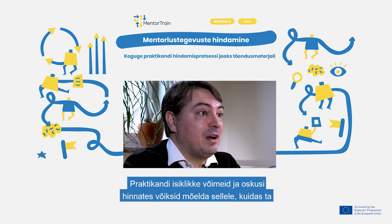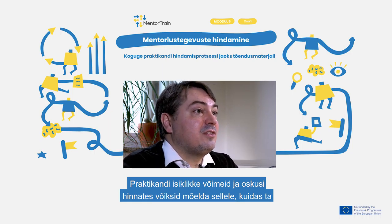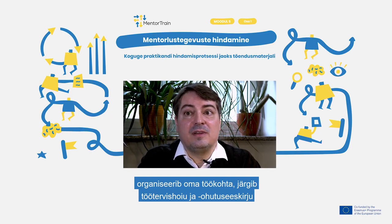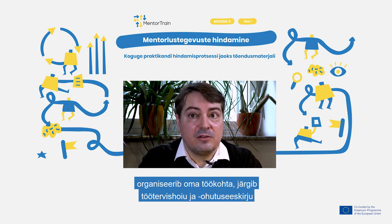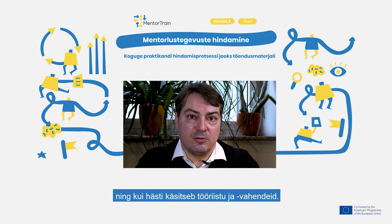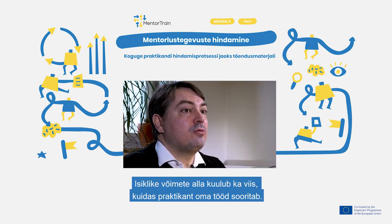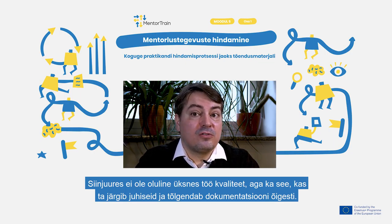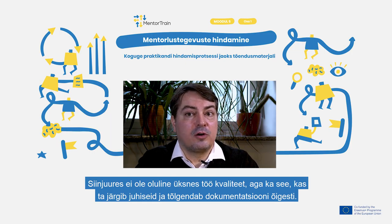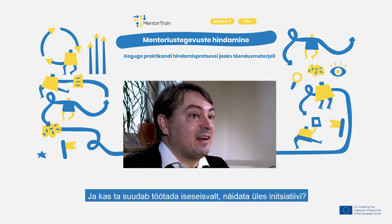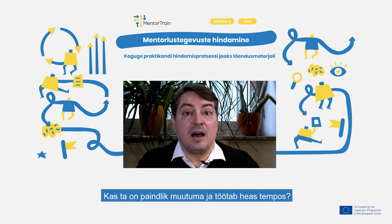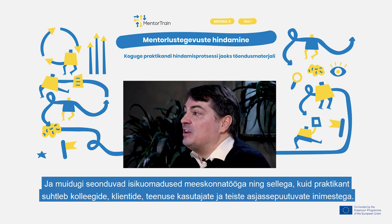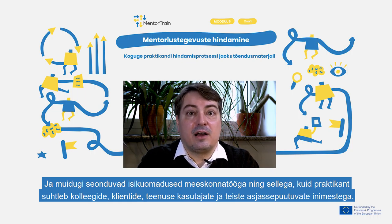When you consider an apprentice's personal abilities and skills, you could think of things like the way they organize their workplace, their regard for occupational safety and health regulations, and if they have a good command of work equipment and tools. Personal abilities also include the way the apprentice performs their work. The quality of work is important here, but also if they follow instructions and interpret documentation correctly. And can they work autonomously, show initiative, are they flexible to change and have a good work pace? And of course there are personal attributes around teamwork and how the apprentice relates to colleagues, customers, service users and other relevant people.